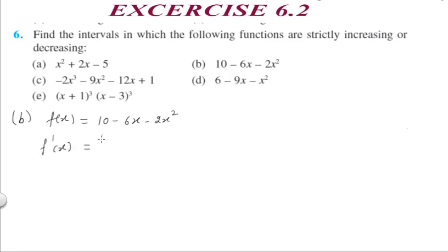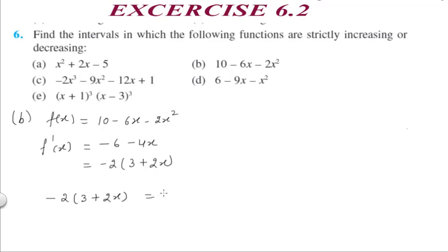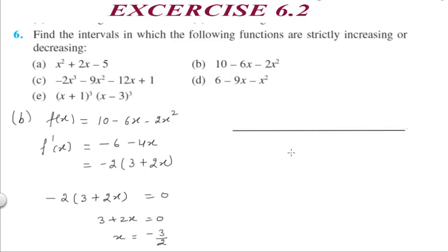First, we differentiate the function. The differentiation of 10 is 0, of minus 6x it is minus 6, and of minus 2x² it is minus 4x. Taking minus 2 common, we have 3 plus 2x inside the bracket. To find the critical point, we equate f'(x) to 0, giving us x equals minus 3 by 2.